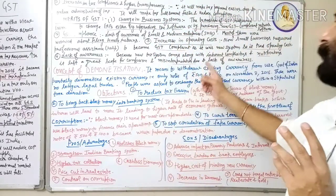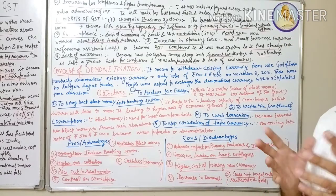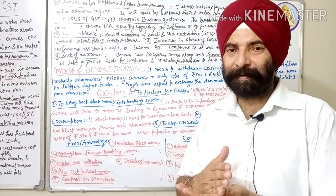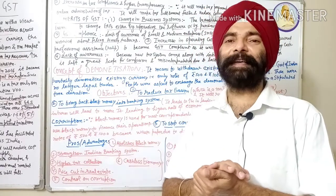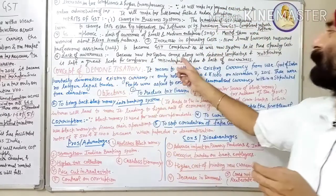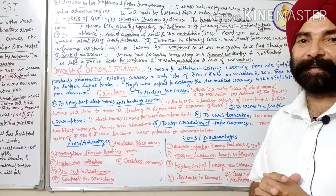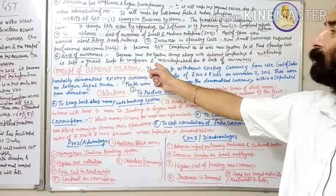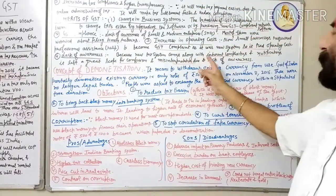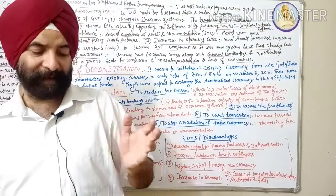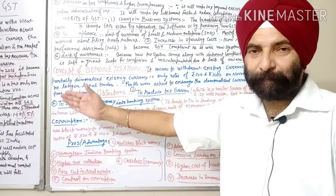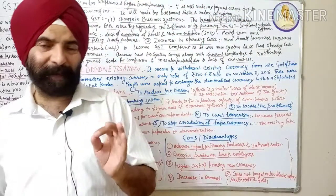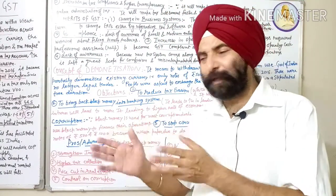The fourth demerit is lack of awareness. It was not easy because there were no clear notifications. The new tax system came along with inherent complexities and there was a lot of confusion surrounding it.